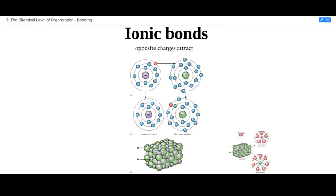Ionic bonds are when atoms interact because opposite charges are attracted to each other. When I described the electron shells earlier and showed you the image with neon, I described sodium being the next atomic number in the periodic table — it would have one more electron, moving out to another electron shell. That single electron in its orbit all by itself isn't the most stable system, so that single electron can be lost quite easily, as the atom's affinity for it can be pretty weak.